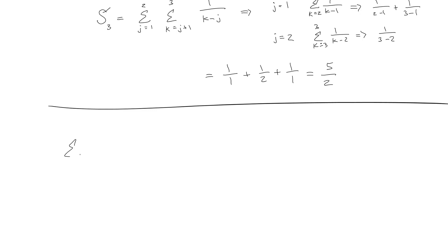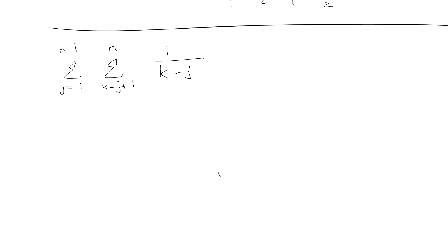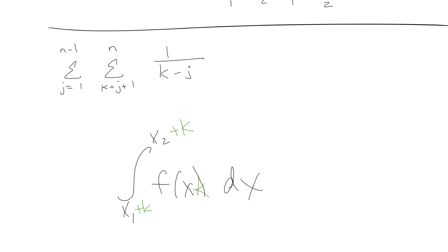I've given up on hoping for wonderful inspiration, so I go back to: j from 1 to n−1, k from j+1 to n, of 1/(k−j). You know you've reached a bad point when you're like — let's try to make these summations simpler by referencing calculus.